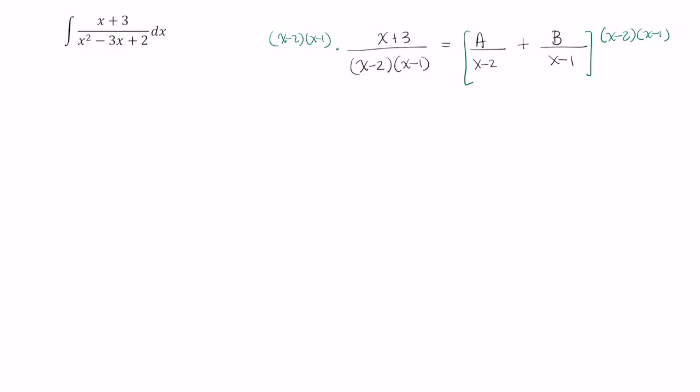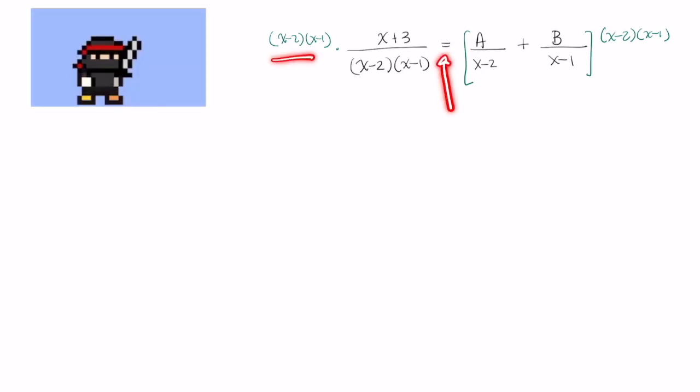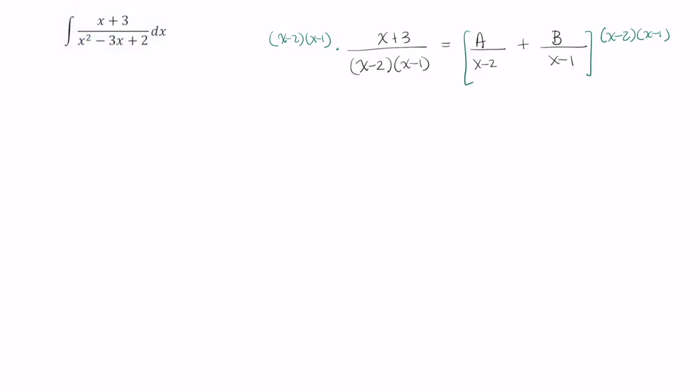And now since we multiplied both sides of an equality by the same quantity, we actually haven't changed anything. So we're applying some ninja algebra here. That is, we're sneakily rewriting things so that they look in a manner that is more useful to us.